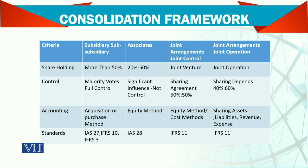For the accounting part, subsidiaries use the acquisition or purchase method. Associates use the equity method. For joint operations, it can be the equity method or cost method, covering sharing of assets, liabilities, revenues, etc. The relevant standards are IAS 27, IFRS 10, IFRS 3, IAS 28, and IFRS 11.